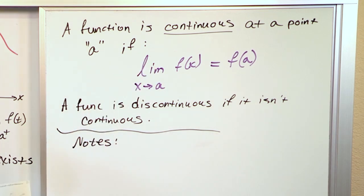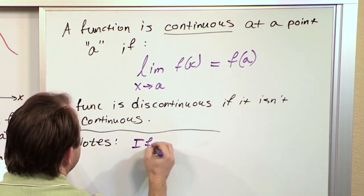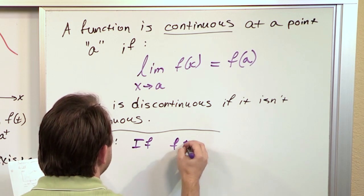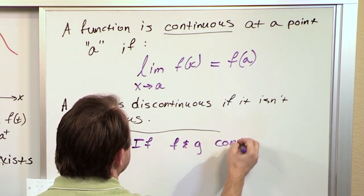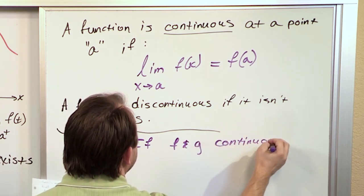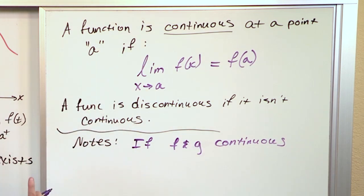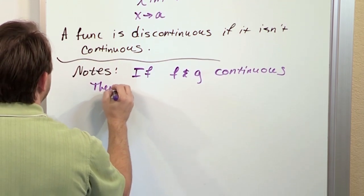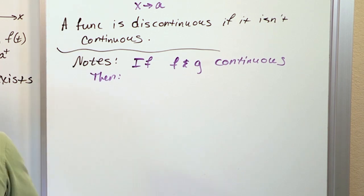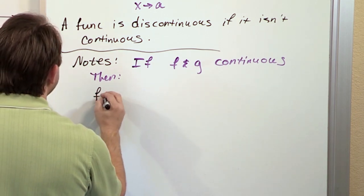When you have a smooth and continuous function, or I should say if you have two functions, F and G, and they're both continuous, right? If you have two continuous functions, then you have a bunch of things you can write down.